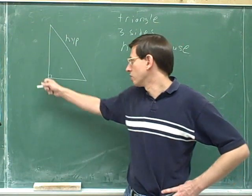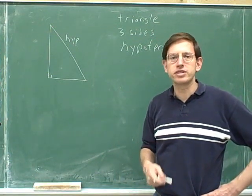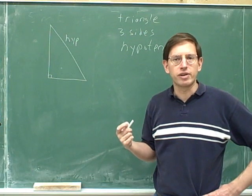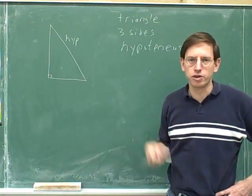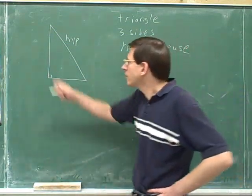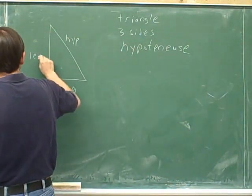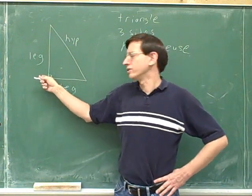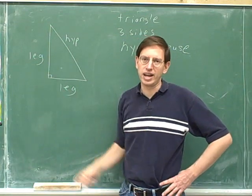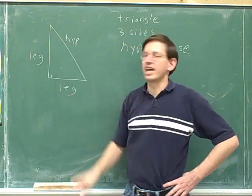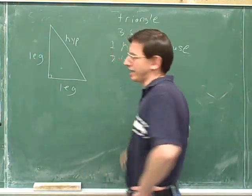If you don't have a right triangle, there is no hypotenuse, because there is no right angle — the hypotenuse is opposite the right angle. What do we call the other two sides? Those are called the legs. The legs are both adjacent to the right angle — each leg is touching the right angle — but the hypotenuse is opposite the right angle. So we have three sides: one hypotenuse and two legs.